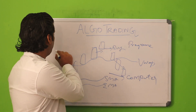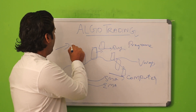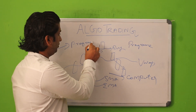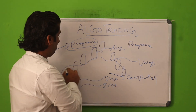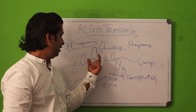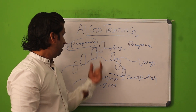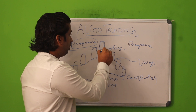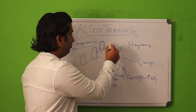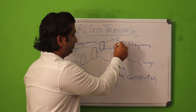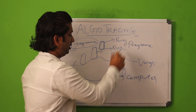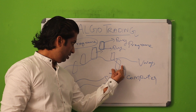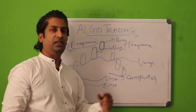First you have to make a program. In algo trading you make a program that says: if the candle closes above the VWAP, we have to go for buy. Same — if the candle closes below the VWAP, you can go for sell.